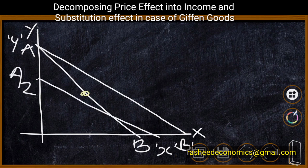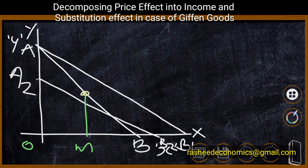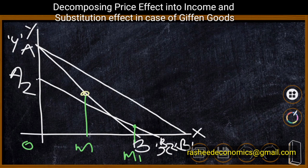Suppose the consumer at the initial stage, when the income-price line was AB, is consuming OM units of commodity X. This is the initial consumption. When the price of the commodity is decreased and after compensating variation in income, the new income-price line is A2B2, and the consumer is now consuming OM1 of the commodity. This movement represents the substitution effect, because we have eliminated the income effect.